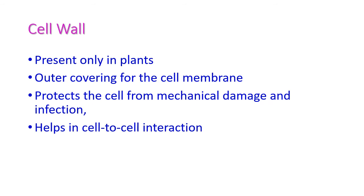Cell walls are present only in plant cells and are absent in animal cells. The cell wall is the outer covering for the cell membrane; it covers the entire cell and gives protection. It protects the cell from mechanical damage and infection, and helps in cell-to-cell interaction.